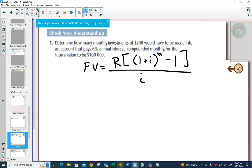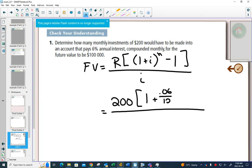So here, it's determined how many monthly investments of $200, so when plugging things in, we know that we're plugging in $200 a month, would have to be made into an account that pays 6% interest compounded monthly. So the I part will be 0.06 divided by 12, and we want the future value to be $100,000.